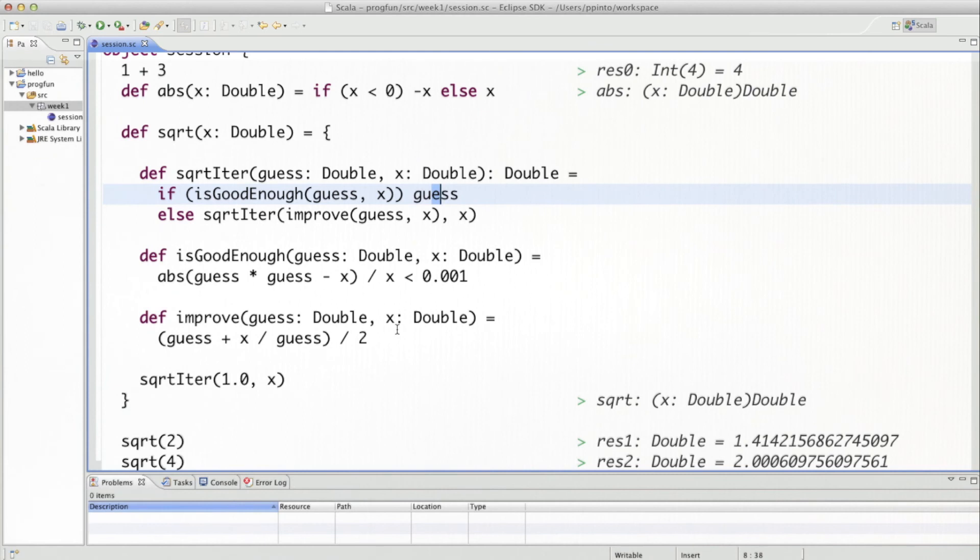So what you see here in the worksheet is that the x parameter that comes into square root is duplicated here, here, and here. But it's never changed. It's always passed as it is before. So we can simply eliminate it, all these occurrences here.